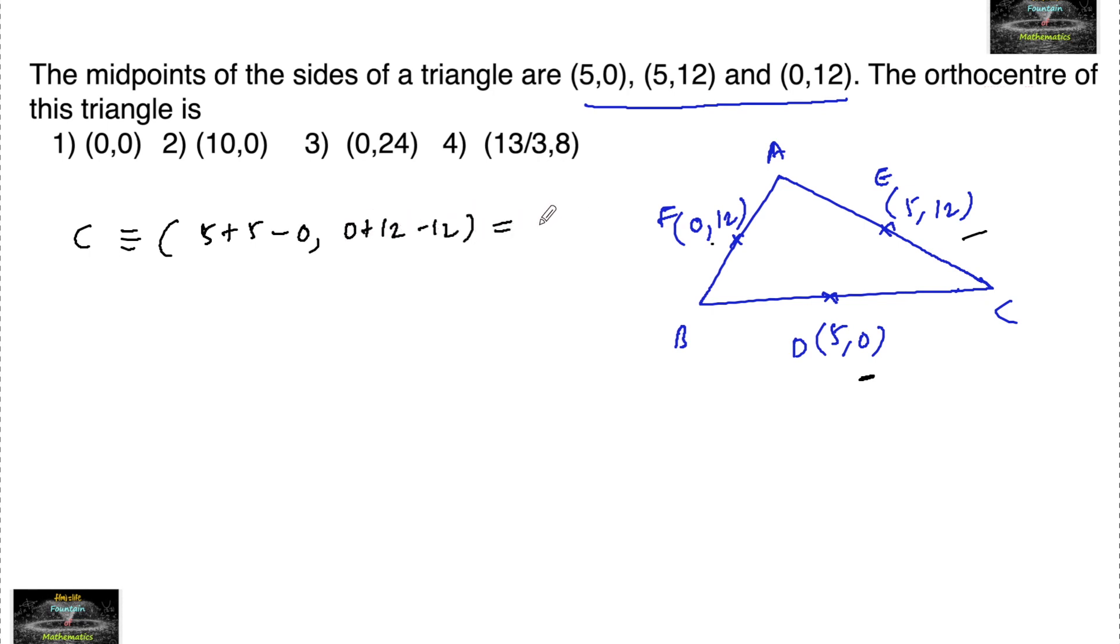So that is (10,0), so we get the point C as (10,0). And the vertex A can be written as (5+0-5, 12+12-0), that is (0,24).